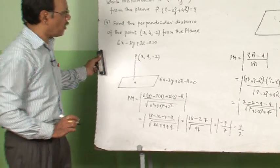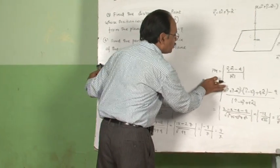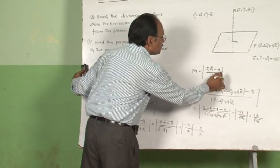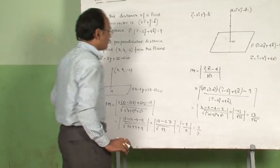Since distance is always positive, we take the modulus value, which is 9/7. Please bear in mind to always use the modulus sign — distance should never be negative.